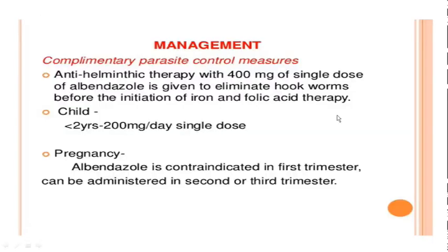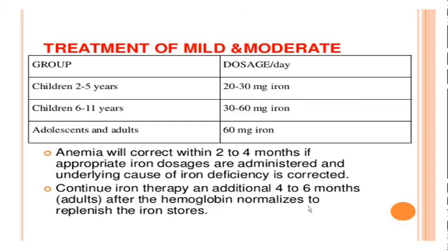The management: we talked about anti-helminthic therapy, which is 400 mg single dose of albendazole given to eliminate any hookworm manifestation, which is very common in the Indian scenario. In children of less than 2 years, 200 mg per day as a single dose. In pregnancy, albendazole is contraindicated in the 1st trimester but can be administered in the 2nd and 3rd trimester. The elemental iron should be given on a daily basis, and usually anemia will correct in 2 to 4 months if appropriate iron doses are administered. We have to continue the iron therapy for an additional 4 to 6 months.